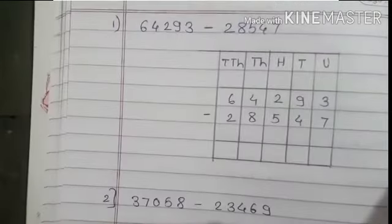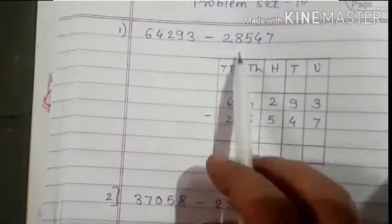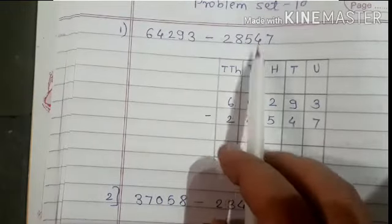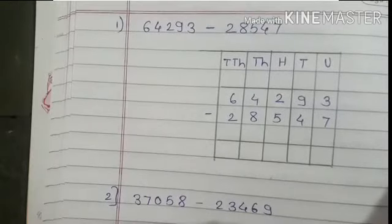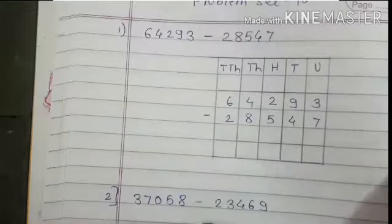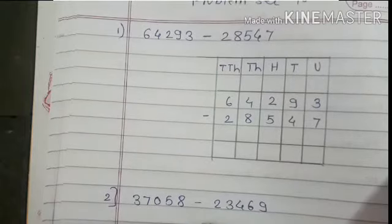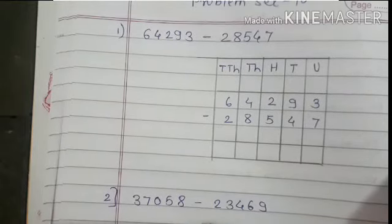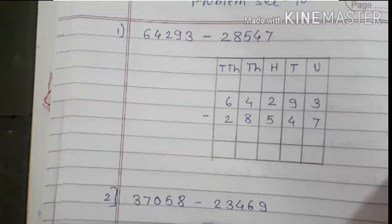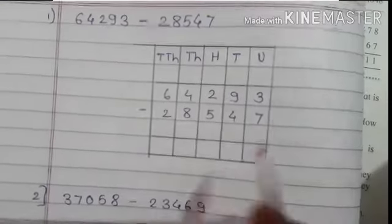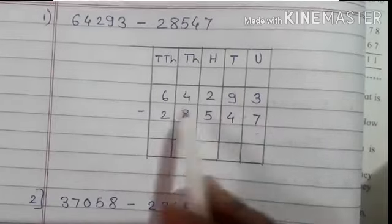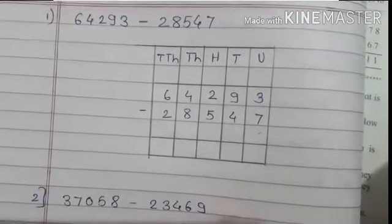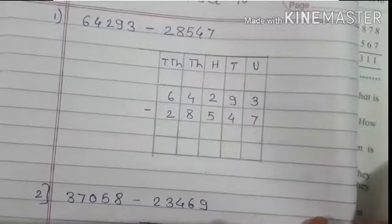64,293 minus 28,547. Here 5-digit examples are given. Already this is based upon your revision only. In last year you have solved the subtraction, so problem set 10 is for your revision. So first here I make the 5 columns and write the numbers from unit place.